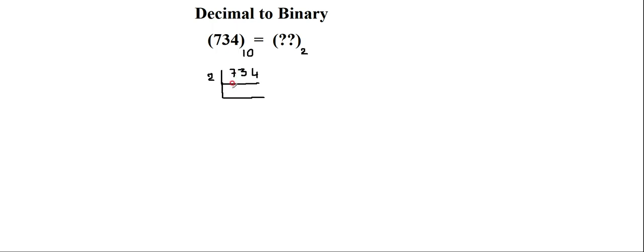I'll first consider the number 7: 2×3 is 6, remainder is 1. Next I consider 13: 2×6 is 12, remainder is 1. Next the number 4: 14, and 2×7 is 14, so the remainder is 0. So the quotient is 367. Next I'll divide 367 by 2 one more time.